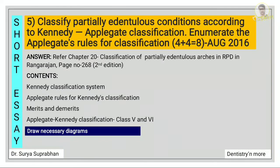Classify partial edentulous condition according to Applegate and Kennedy classification. Enumerate the Applegate rules for classification. For this refer chapter 20, classification of partially edentulous arches in RPD, page number 268. First write about the Kennedy classification system, then write the Applegate rules for Kennedy classification. Write the merits and demerits, and mention class 4, class 5, and class 6 of Applegate-Kennedy classification. Also draw the necessary diagrams.